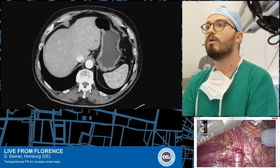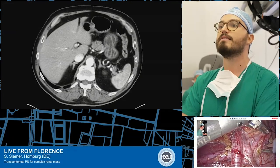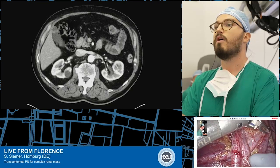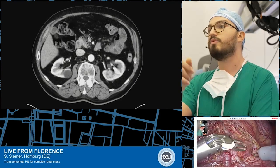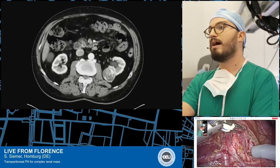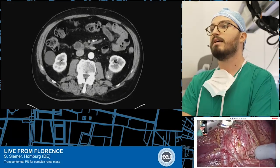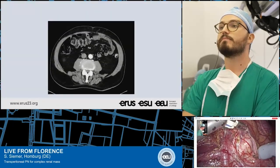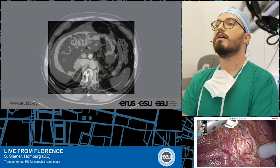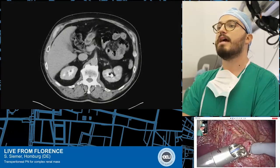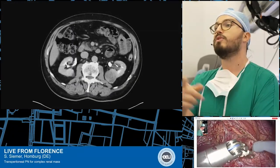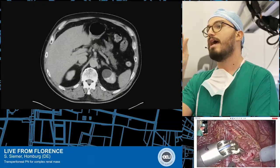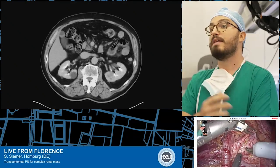The arterial phase gives us the opportunity to see the vascular aspects of the left kidney — the two arteries, the left renal mass located posteriorly, medially, and mesorenally — and the vascular system. The urographic phase shows the relationship between the left renal mass and the collector system.